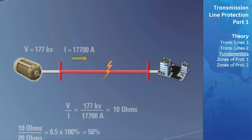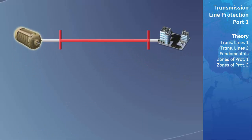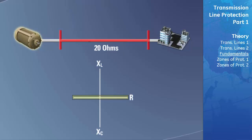The impedance of the line is often drawn on an RX diagram. The x-axis represents the resistive component of the impedance of the line. The y-axis represents the inductive component of the impedance of the line in the positive direction and the capacitive component of the impedance of the line in the negative direction. The impedance of a transmission line is inherently mostly inductive; therefore, if you were to plot the impedance of the line on this graph, it would be very close to the y-axis.